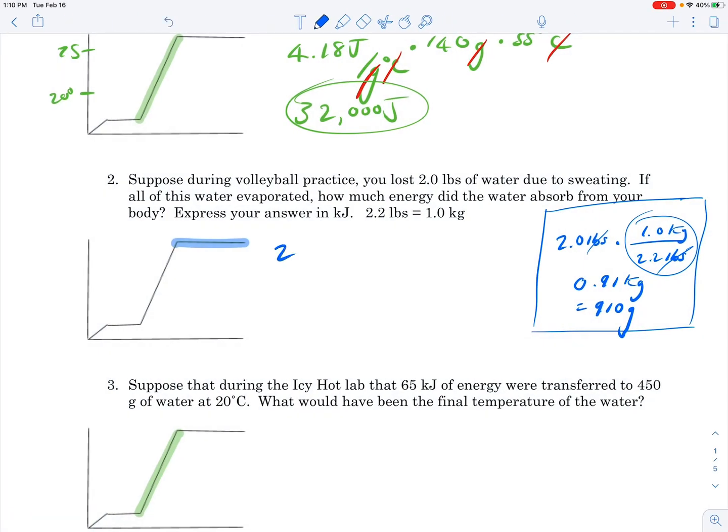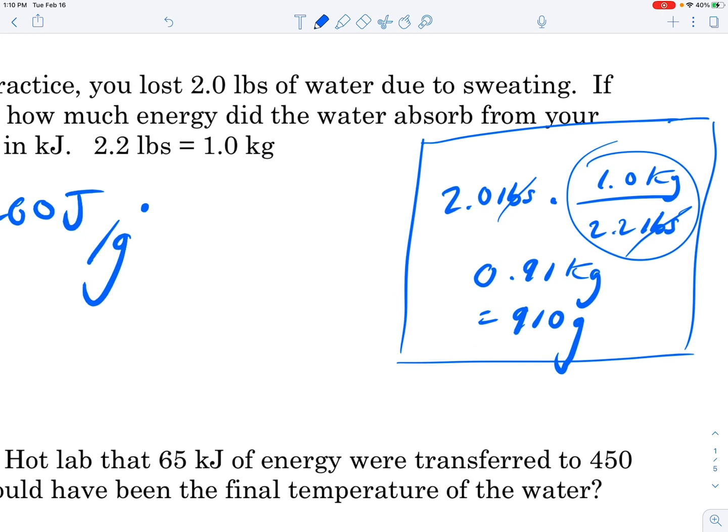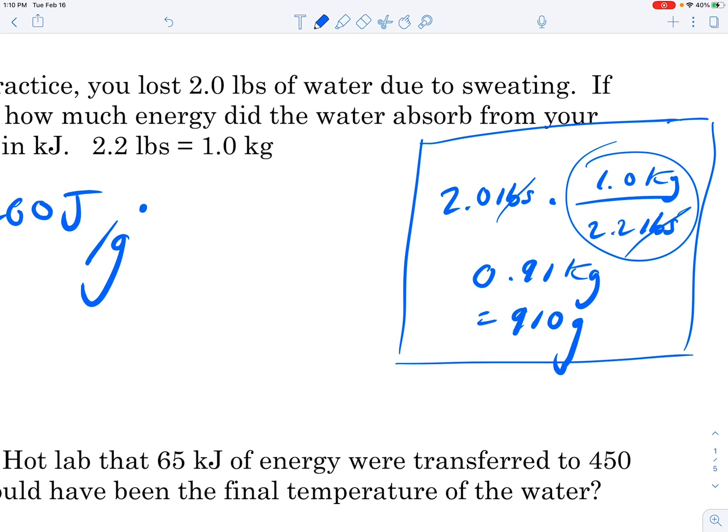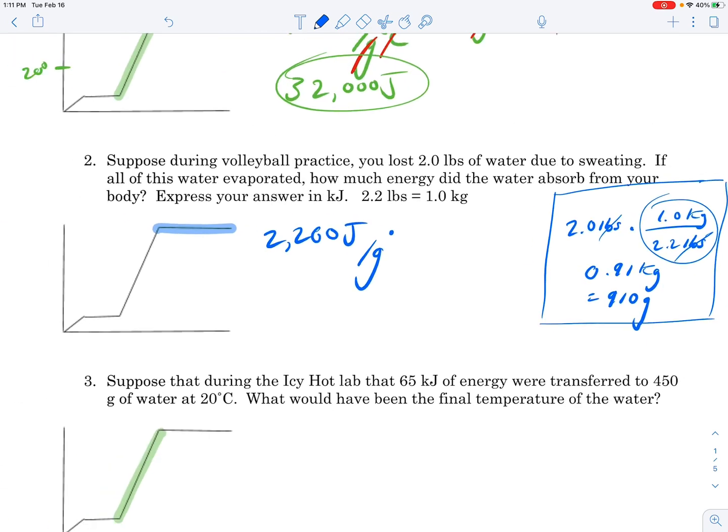Let's write it down: 2,260 joules over grams. Now we simply have to multiply by the grams of water that's evaporating. They told us it was 2 pounds. On the right here, I've set up a conversion factor: 1 kilogram over 2.2 pounds. We multiply that by 2 pounds, the pounds cancel, and 2 over 2.2 gives us 0.91 kilograms or 910 grams.